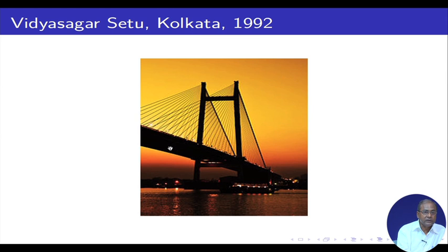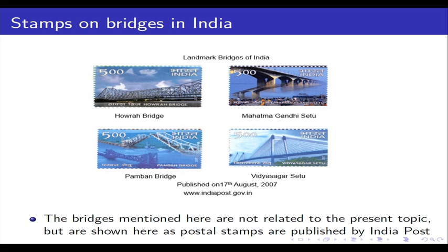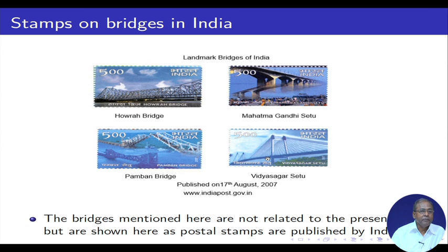There are so many iconic bridges in the world, but I chose these because they appear on the 5-rupee stamp published by India Post in 2007, featuring the Howrah Bridge, Mahatma Gandhi Setu, Pamban Bridge, and Vidyasagar Setu. I thought it is a good idea to show you these bridges because bridge engineering is a very vast area — not only from the design point of view, but also from construction and maintenance. Bridge monitoring is also equally very important.